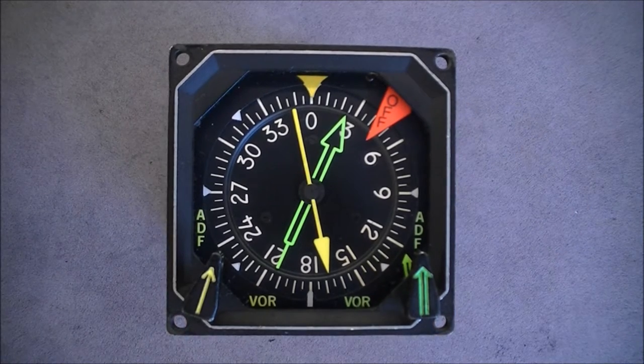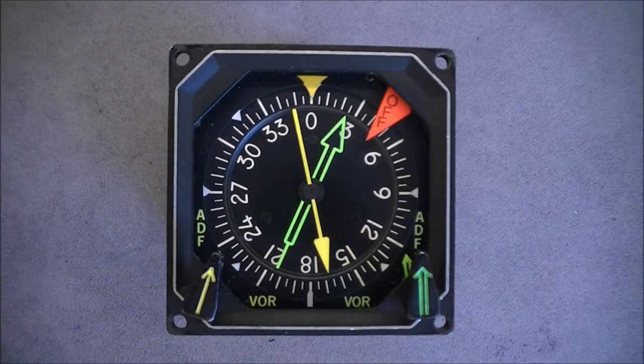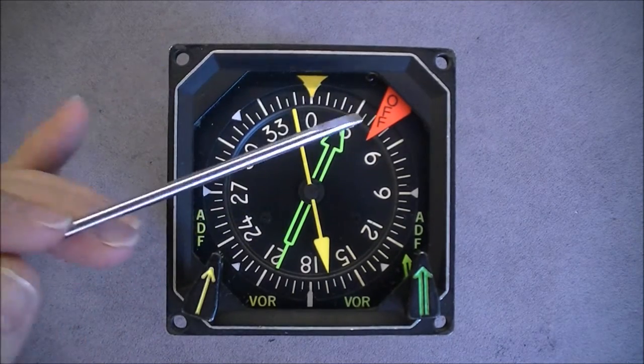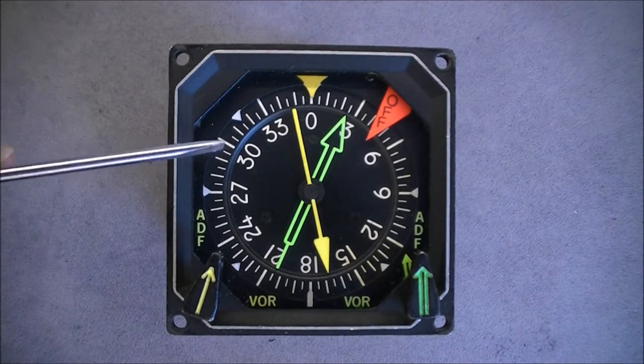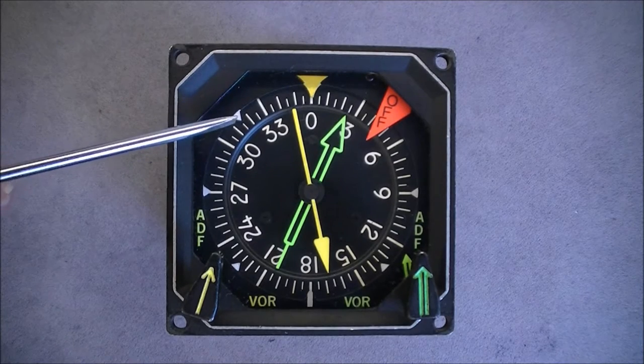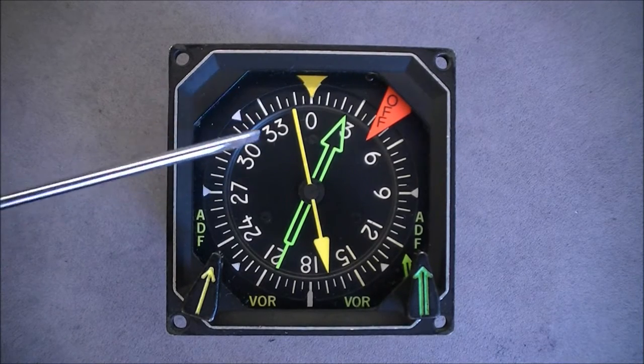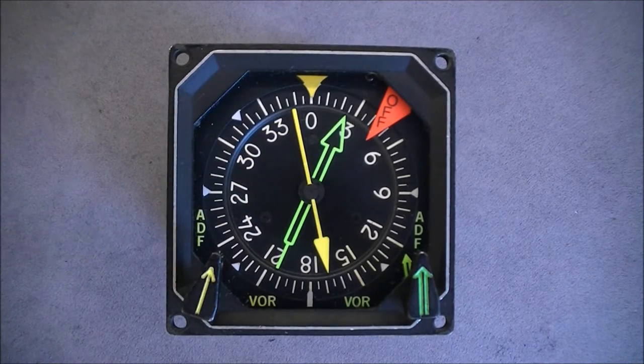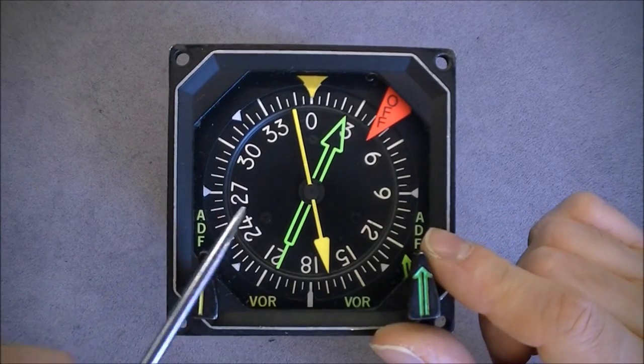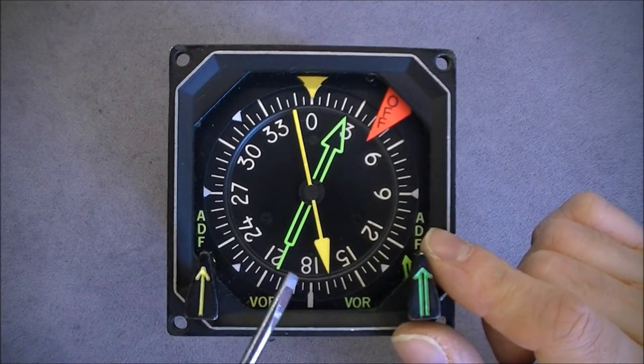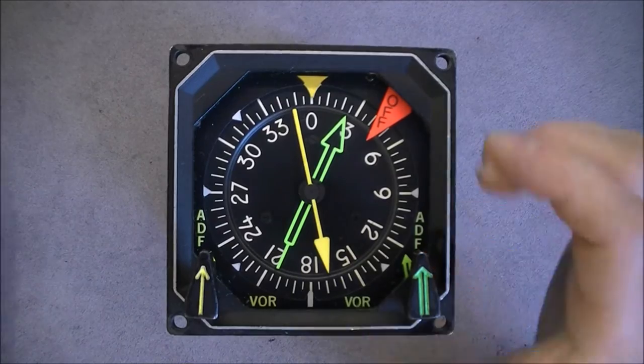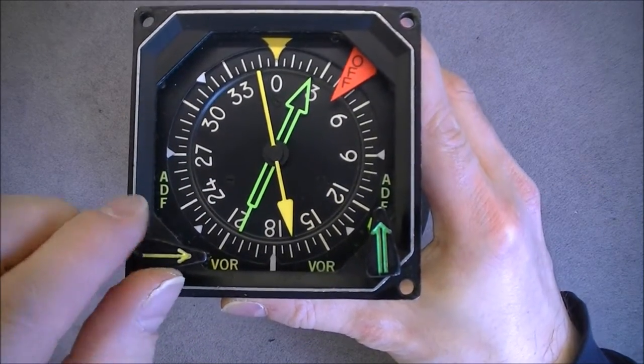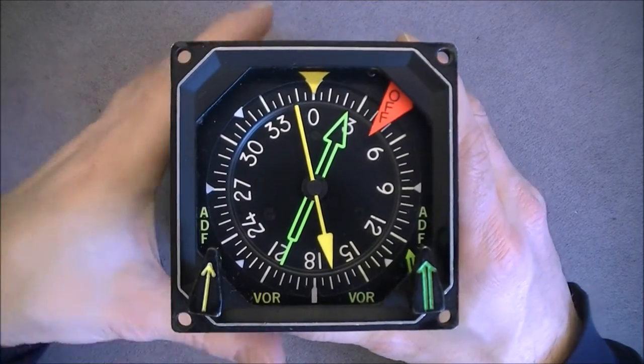We have on this front dial an off flag that flips out of the way when the instrument is powered. We have a background disk with compass directions. We have two arrows on the two buttons, a green arrow, green button, yellow arrow, yellow button. Each of these buttons can be selected between VOR and ADF indications.